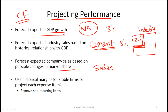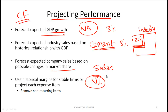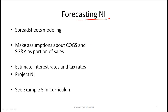You can then use historical margins for stable firms to come up with net income, or you can project each expense item individually. When you come up with net income you should remove any non-recurring items. For example, if current year sales include revenue from an operation that will be discontinued, you should factor in the fact that one business unit is being discontinued when making future sales projections.